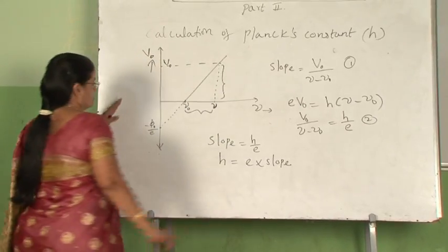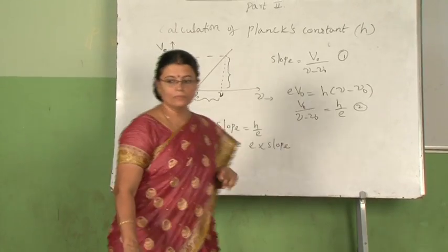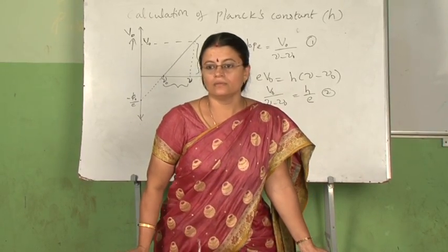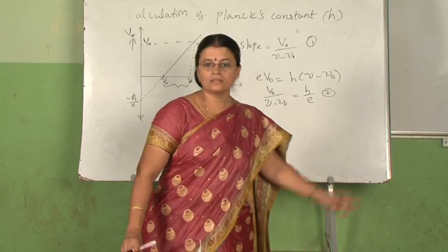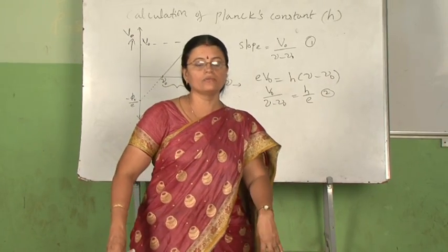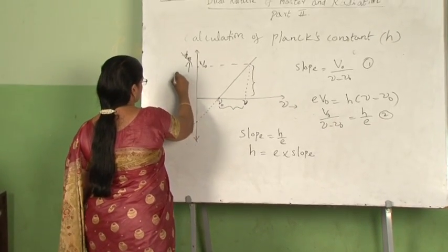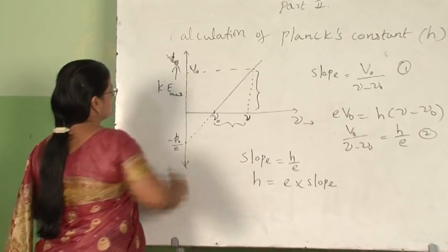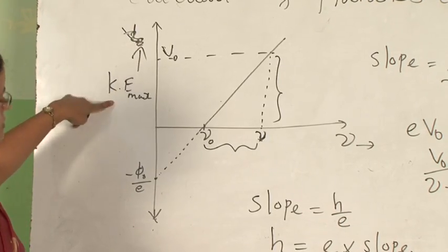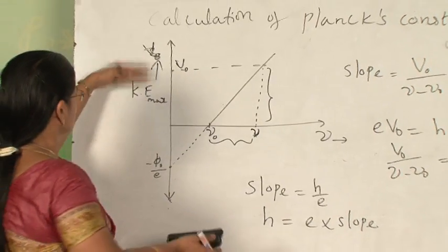Another possible question from this graph: they may ask you to draw the graph between maximum kinetic energy and frequency of incident photons. This is essentially the same graph, because stopping potential is a measure of maximum kinetic energy of the emitted photoelectron. We just have to change the y-axis label from V₀ to kinetic energy maximum. Since V₀ is a measure of maximum kinetic energy, just changing that label gives the same type of graph.